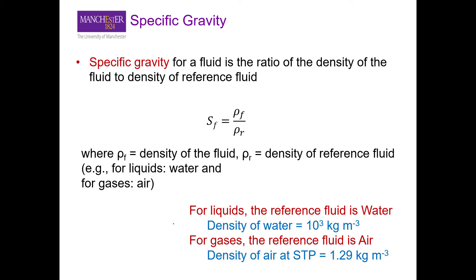A very important property that we use a lot is specific gravity. Specific gravity is the ratio of the density of your fluid to the density of a reference fluid. This is one way of making density independent of your units. For liquids, we take the density of water — that is 1000 kg/m³ — and for gases we take air as the reference fluid, which is 1.29 kg/m³. Please do not make the mistake of using the density of water as a reference fluid when dealing with gases.